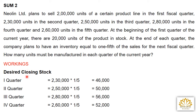First, let's find the desired closing stock. At the end of each quarter, inventory equals 1/5th of next quarter's sales. So: 1st quarter closing stock = 2,30,000 × 1/5 = 46,000 units. 2nd quarter closing stock = 2,50,000 × 1/5 = 50,000 units. 3rd quarter closing stock = 2,80,000 × 1/5 = 56,000 units. 4th quarter closing stock = 2,60,000 × 1/5 = 52,000 units.